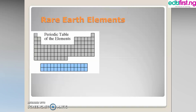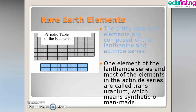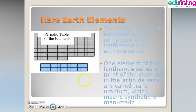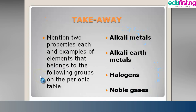The next group is the rare earth elements, found beneath the main table. They are called the lanthanides and actinides. The elements from here are called transuranium, meaning they are synthetic or manmade. Most of these lanthanides and actinides are manmade, formed through one process or another.